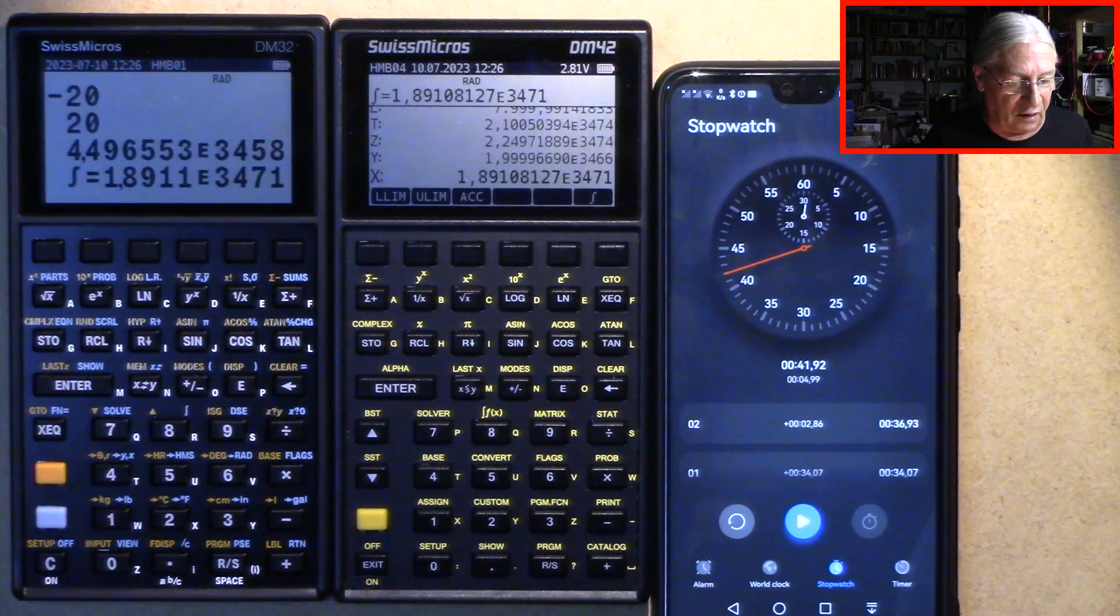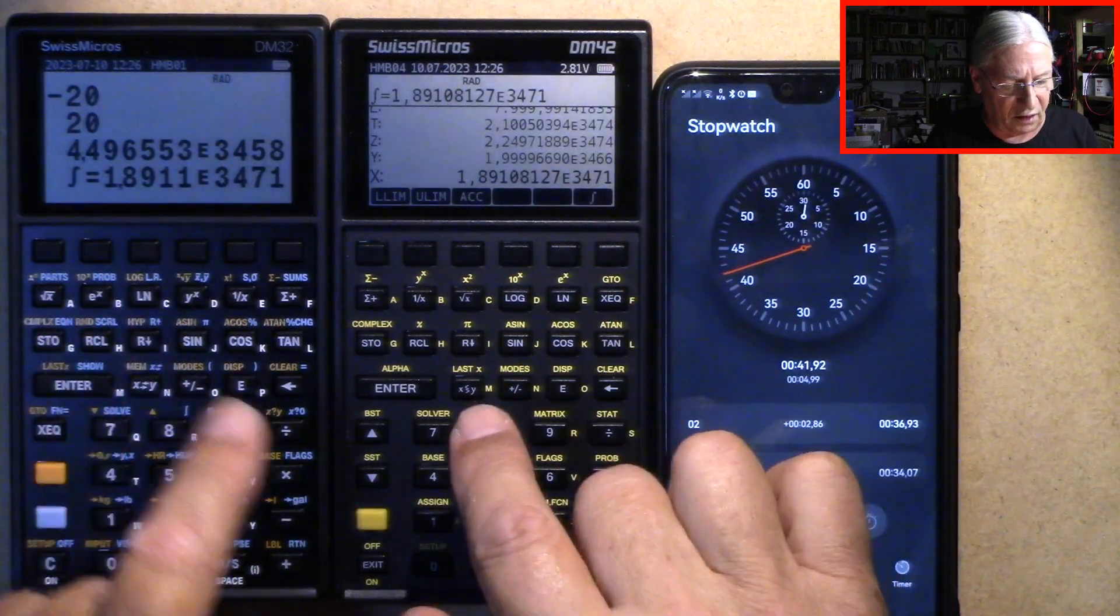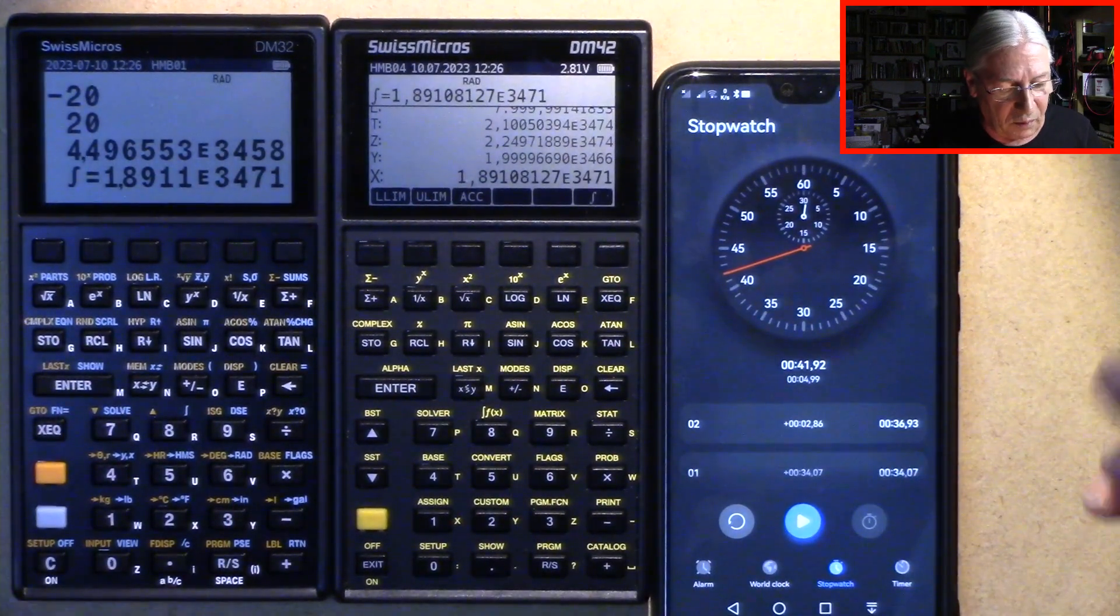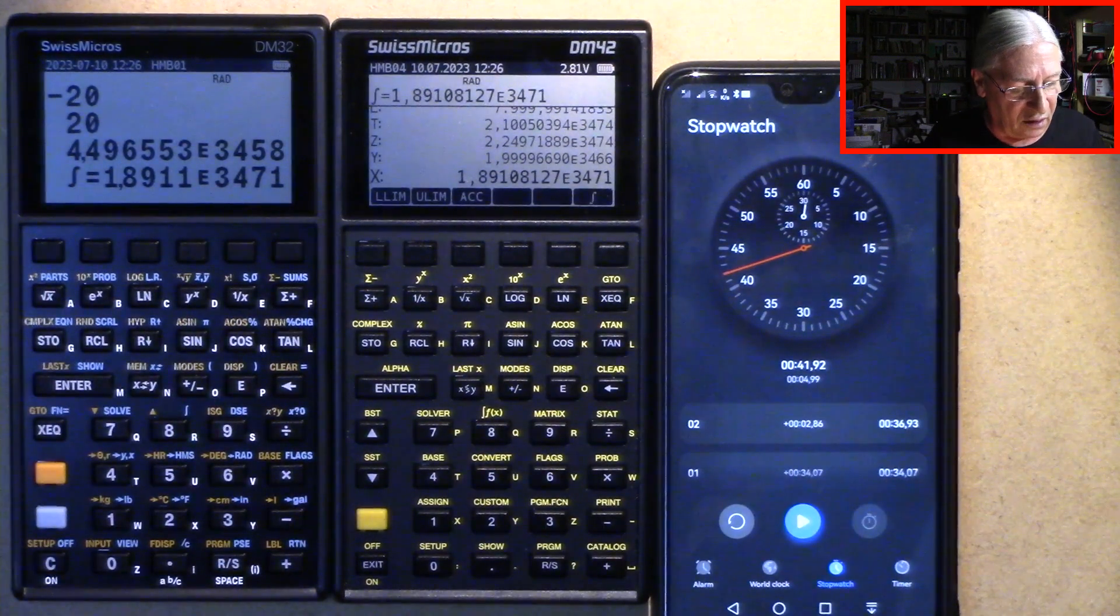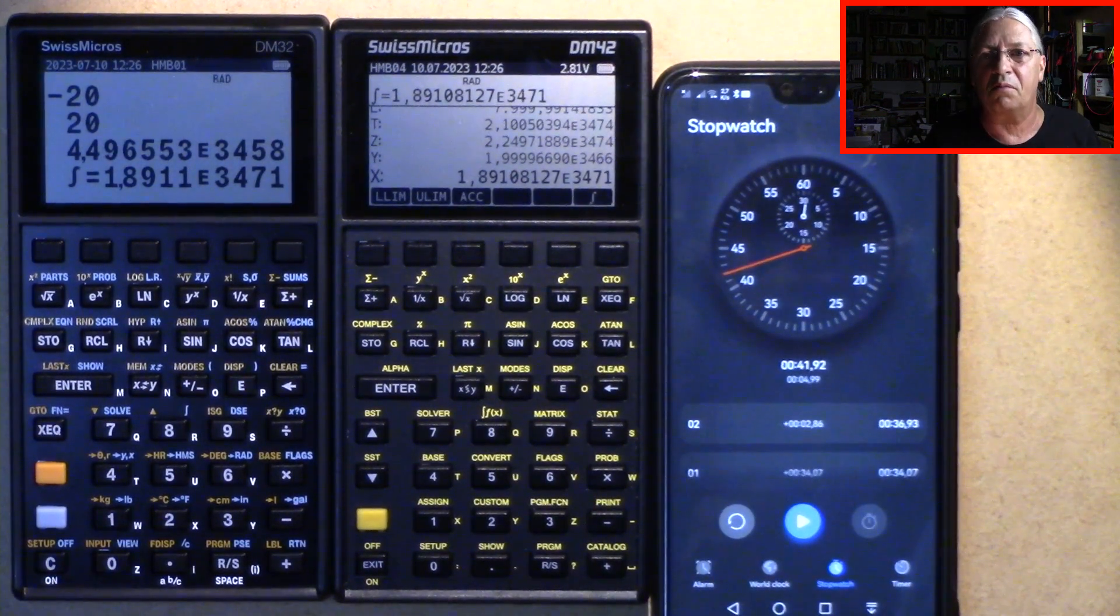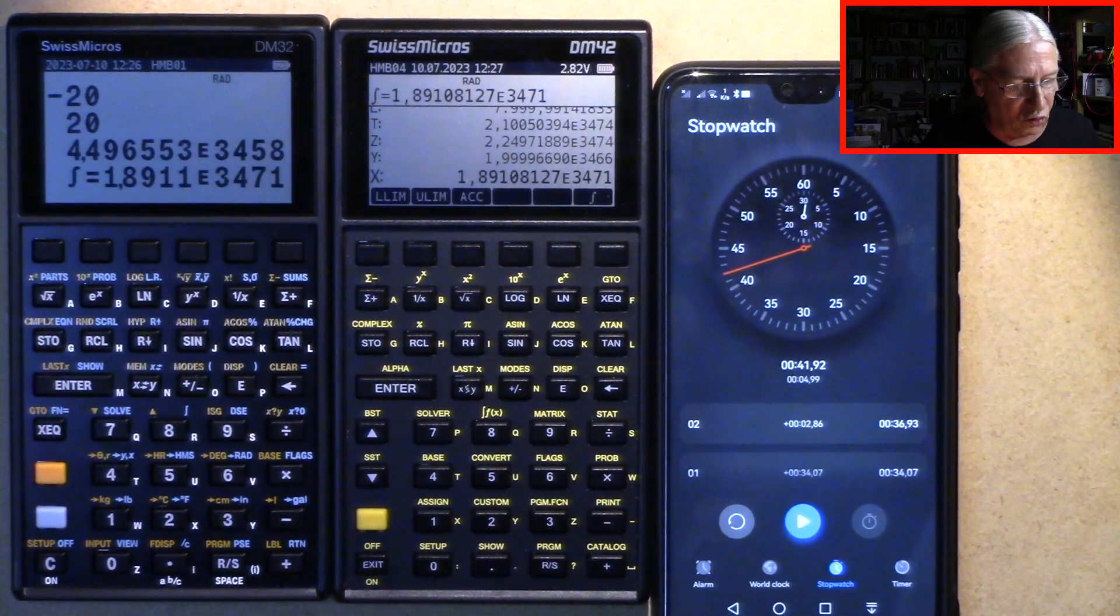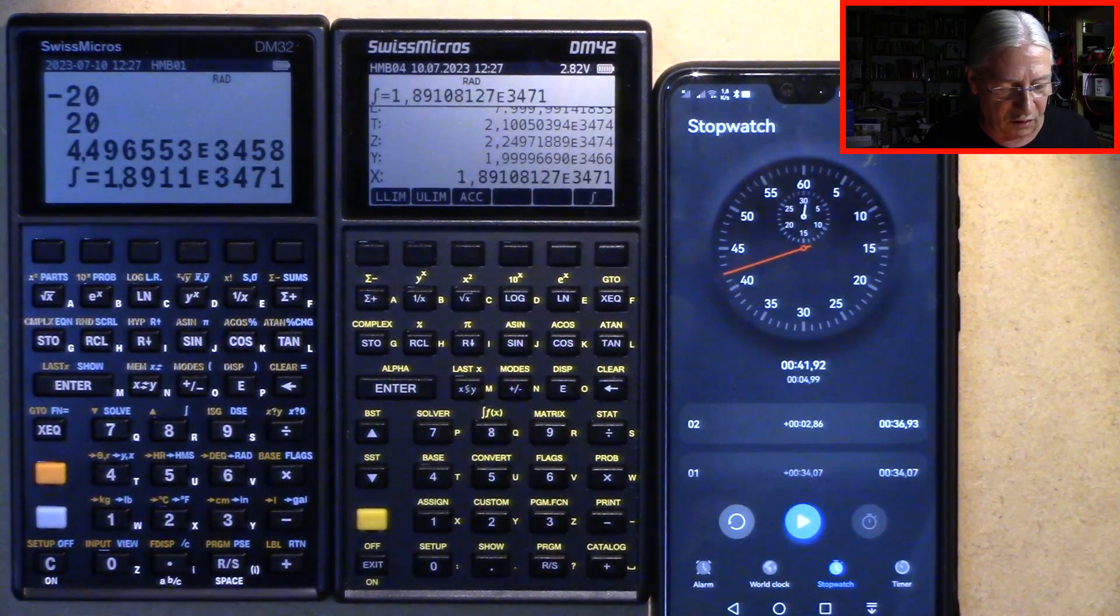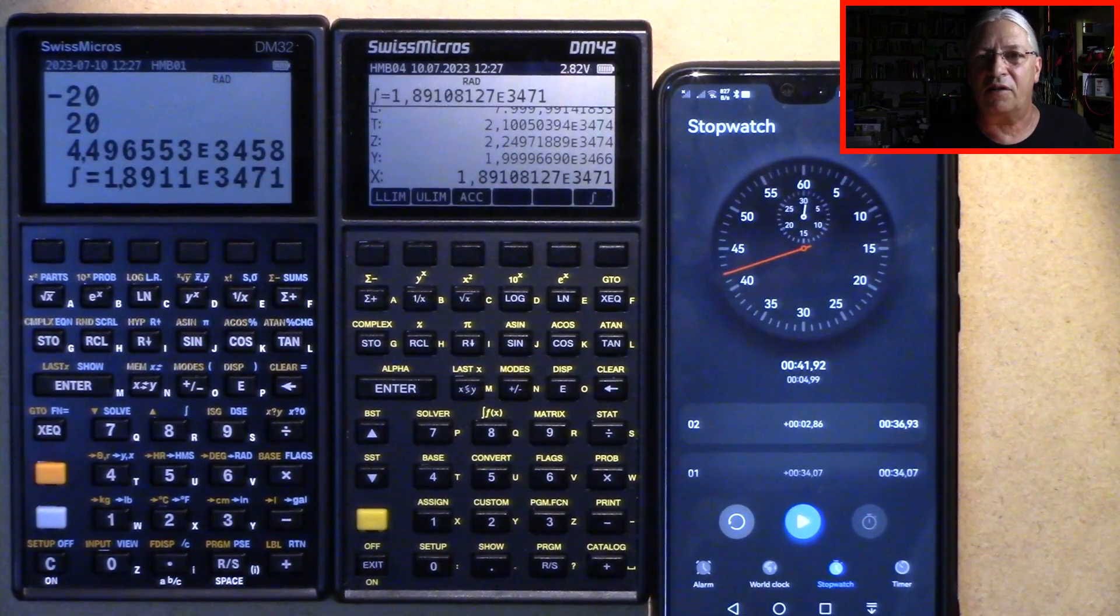Yeah, the internal methods to calculate the integral which are for sure quite different. But I wanted to test some higher math function to compare the two. And I think that's par. So the 32 is very fast and very responsive. So excellent calculator, I'd say.